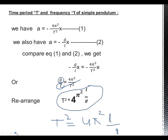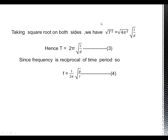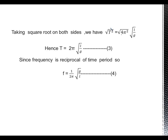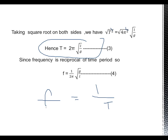Taking the square root on both sides: the square root of T² gives T, the square root of 4π² gives 2π, and the square root of L/g remains. So T = 2π√(L/g). This is the time period. Frequency is the reciprocal of time period: since time period is 2π√(L/g), frequency f = (1/2π)√(g/L).